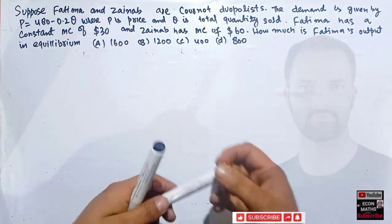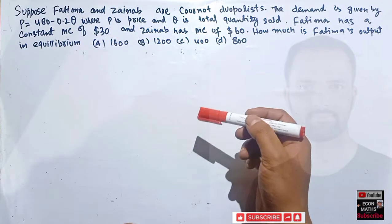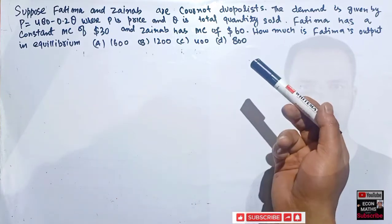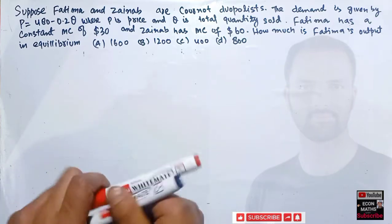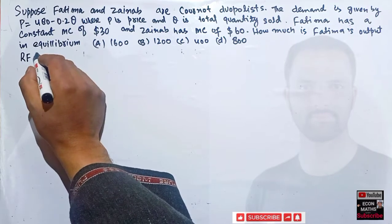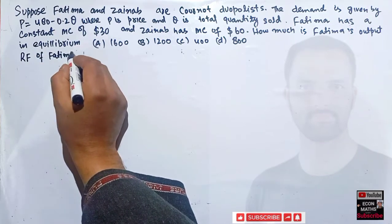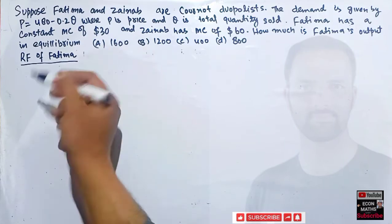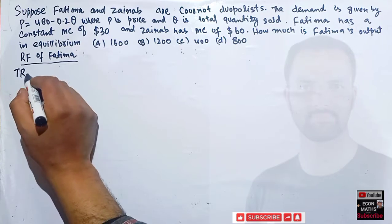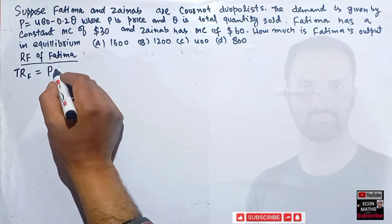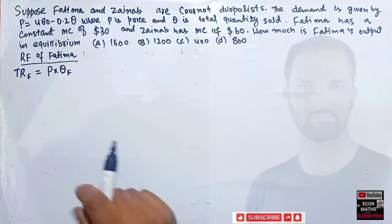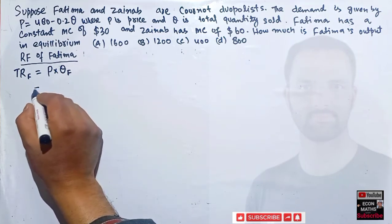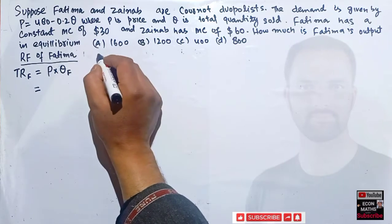We have a corner duopoly model with different marginal costs. First, we need to find the reaction functions of both Fatima and Zeynab. For Fatima's reaction function, the total revenue for Fatima equals price times quantity produced by Fatima, where Qf denotes the quantity produced by Fatima.